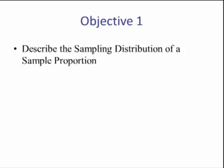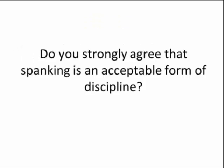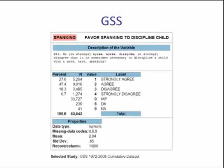Lesson objective 1. Do you strongly agree that spanking is an acceptable form of discipline? The GSS, the General Social Survey, asks this question: Do you strongly agree, agree, disagree, or strongly disagree that it is sometimes necessary to discipline a child with a good hard spanking? Out of 53,043 people asked, 5,264 strongly agreed. This is an example of a sample proportion.